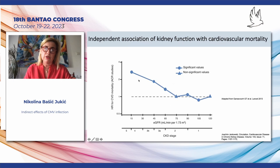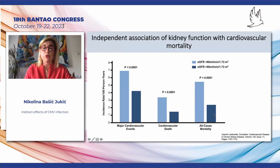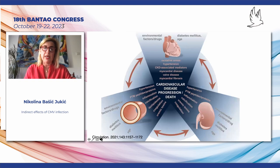Why is this so? As nephrologists, we know that with a decrease of glomerular filtration rate, we have an increase in the risk of cardiovascular mortality. If you look at GFR less than 60 compared to patients with a GFR more than 60 ml per minute per body surface, the incidence rate of major cardiovascular events is much higher, as well as the risk of cardiovascular and all-cause mortality in those with a worse glomerular filtration rate.